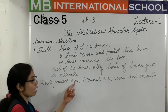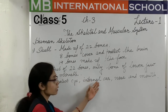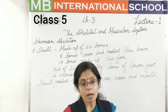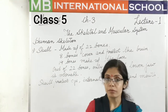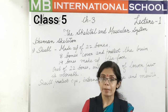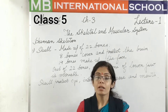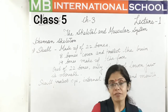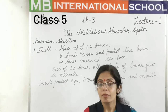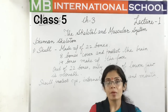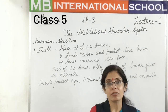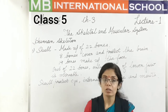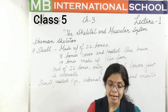Of the 22 skull bones, only the lower jaw is a movable bone. The rest of the skull bones are non-movable. The male skull is slightly different from the female skull. That was about the skull; next is the backbone.